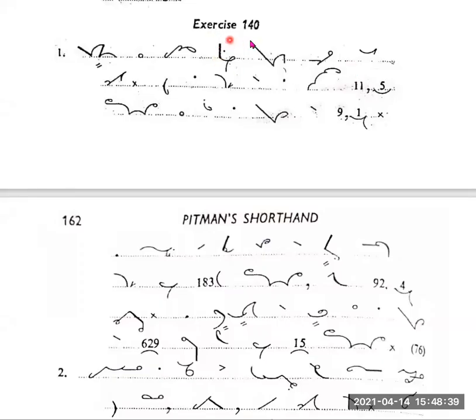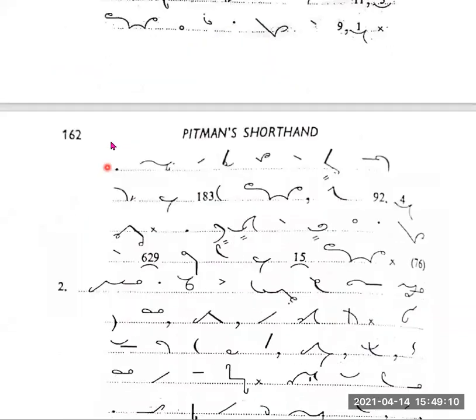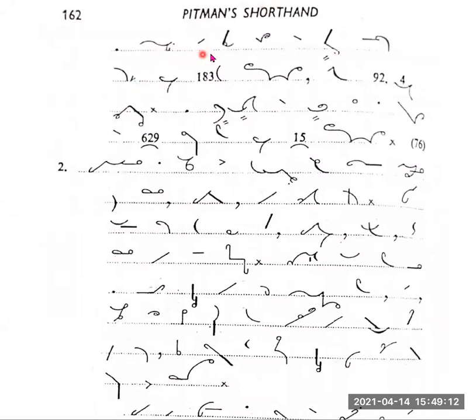Exercise number 140. Belgium is one of the most densely populated countries in the world. Within an area of a little more than 11,500 square miles is confined a population of 9,100,000.